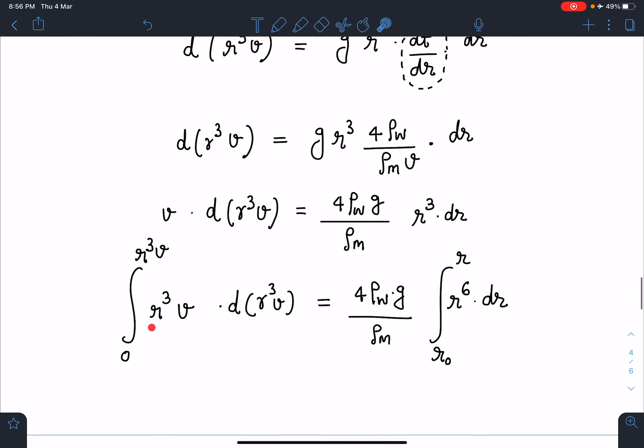Now at t=0, when r was r_not, velocity was 0, so this particular quantity is 0. The lower limit is 0 here. At any instant t when the r value was general r and v was general v, this limit goes from 0 to r³v and here it goes from r_not to general r. When I simplify this, this square by 2 will come.